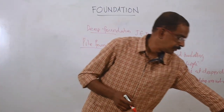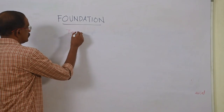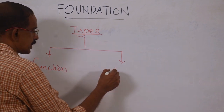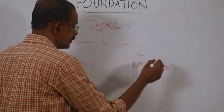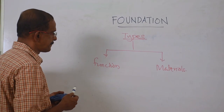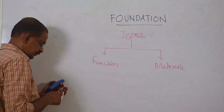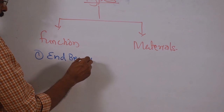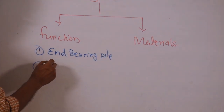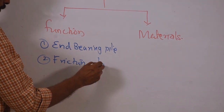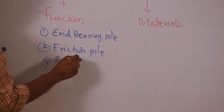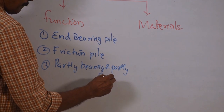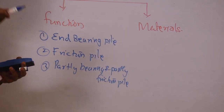Now we will see the types of pile foundation. Pile foundations are classified based on function and based on the material used. Functional classification gives: end bearing pile, friction pile, and partly bearing and partly friction pile.